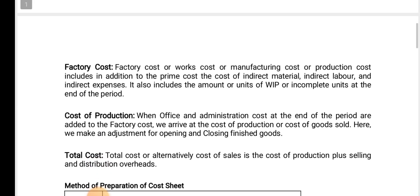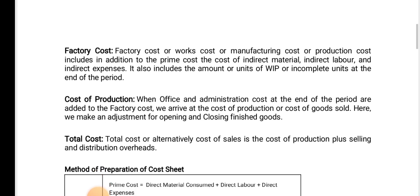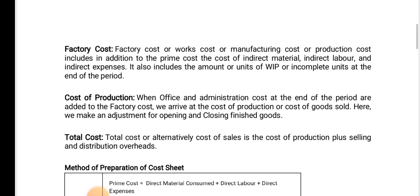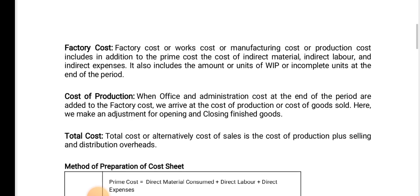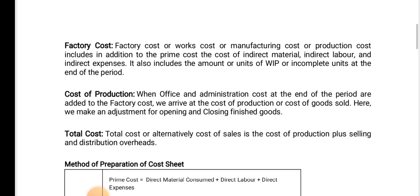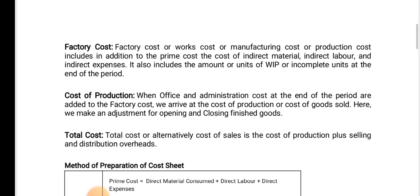Factory cost is the cost of material, indirect expenses, wages, factory electricity, and depreciation. Manufacturing costs or production costs include the prime cost and cost of indirect material, indirect labor, indirect expenses. It also includes the amount of WIP, that means work-in-progress goods — factory cost. Remember these things.